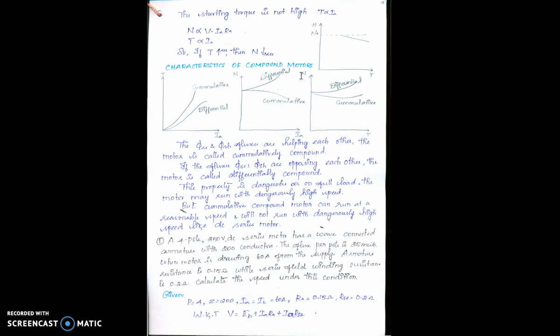The compound motor is suitable where only minimum speed variation is needed — for example, in a train where the next stop is within two kilometers, there is some speed variation but within limits, making the compound motor appropriate. In conclusion, you can now prepare brief comparative notes on all three motors covering their electrical, mechanical, and general characteristics. Thank you.